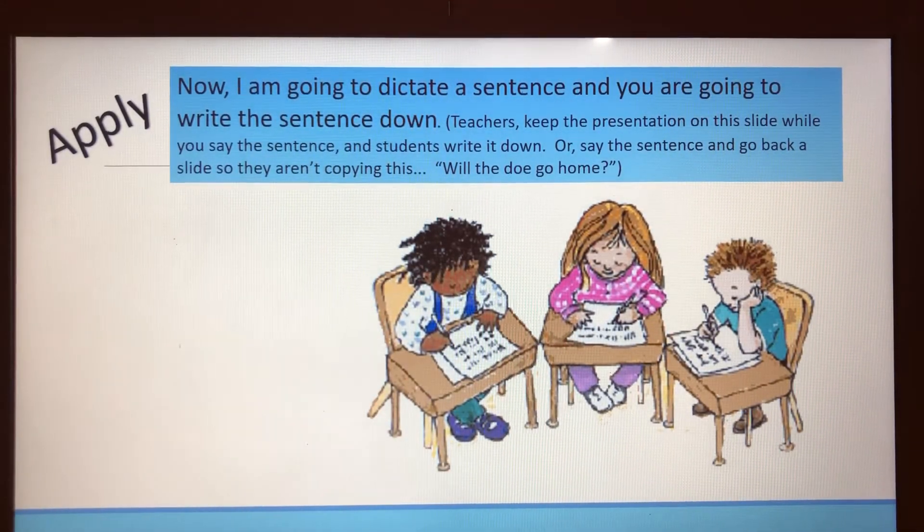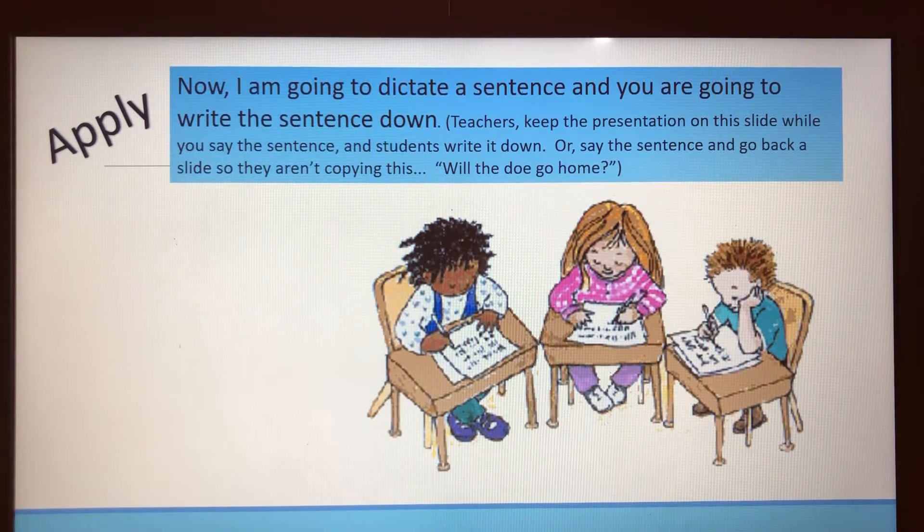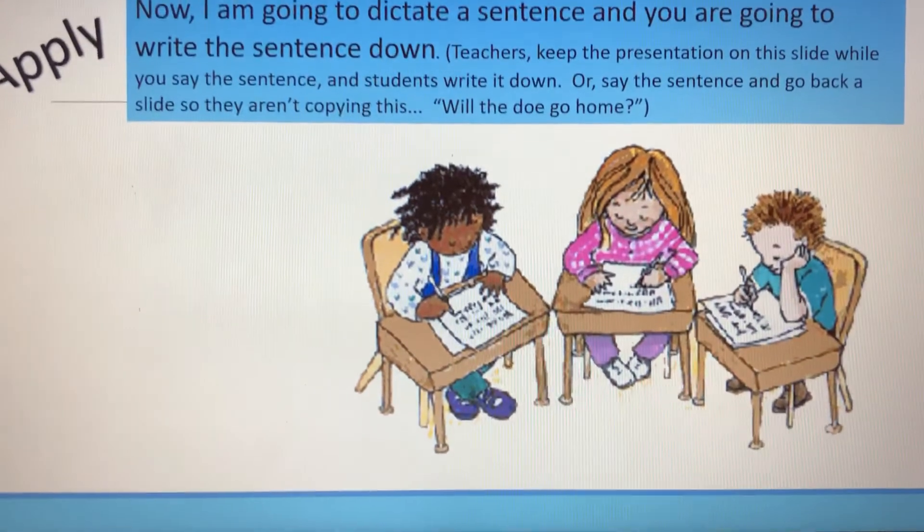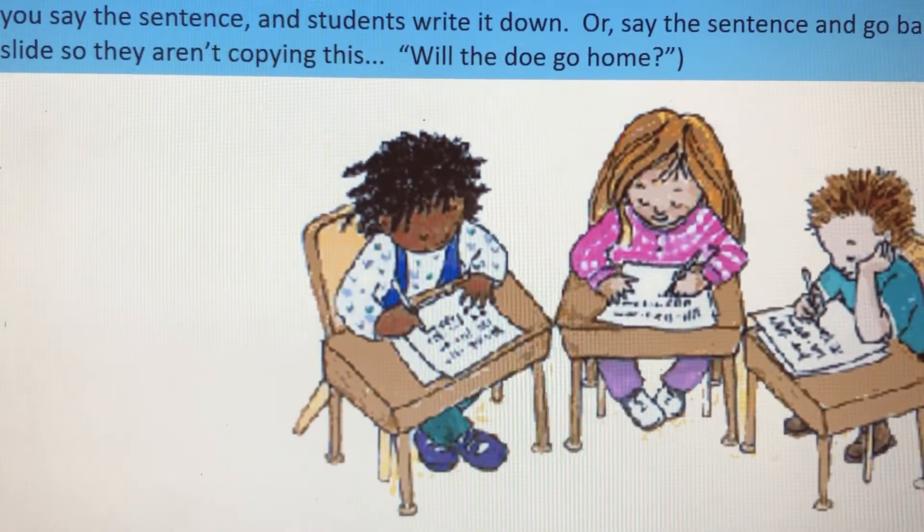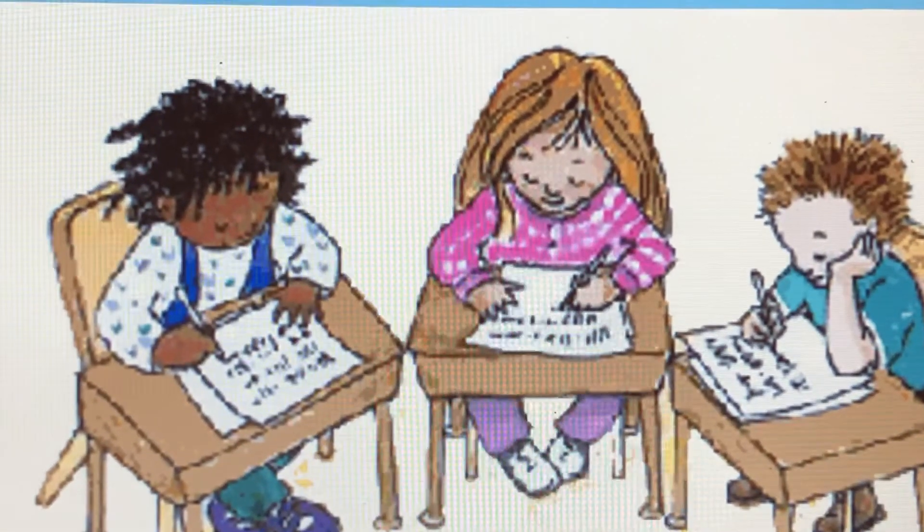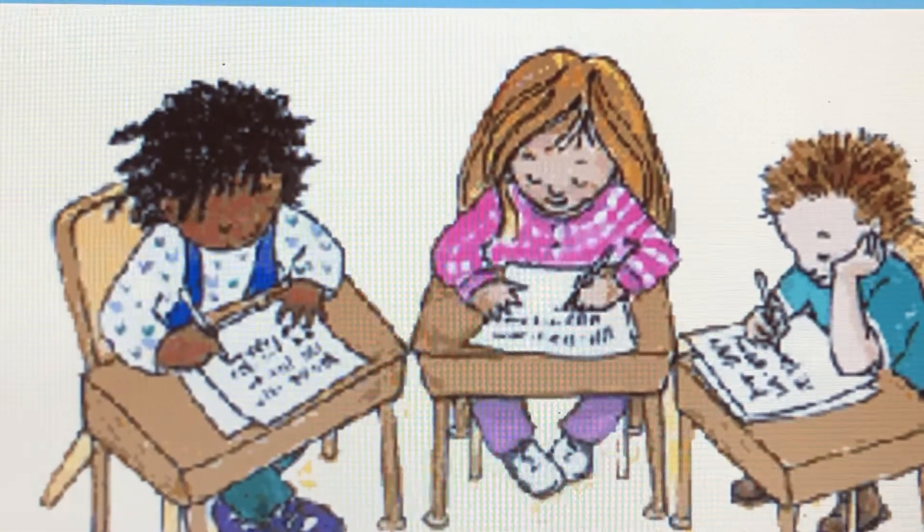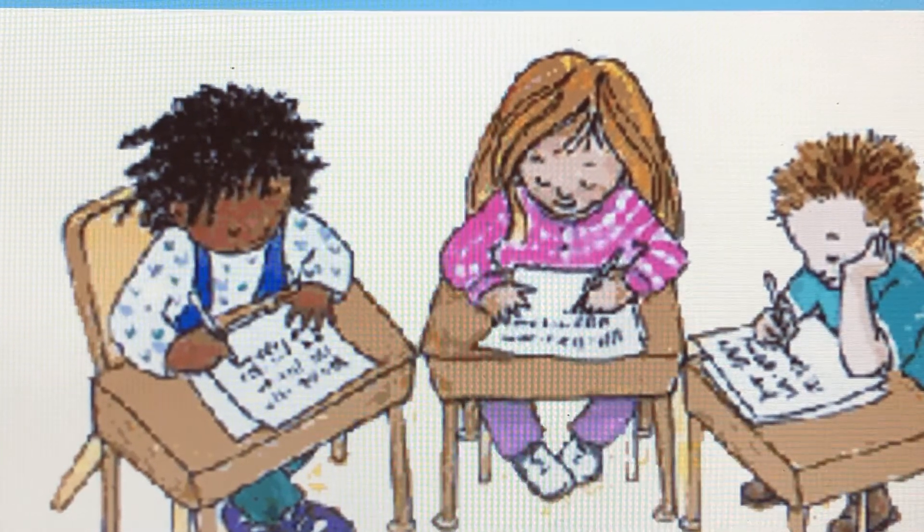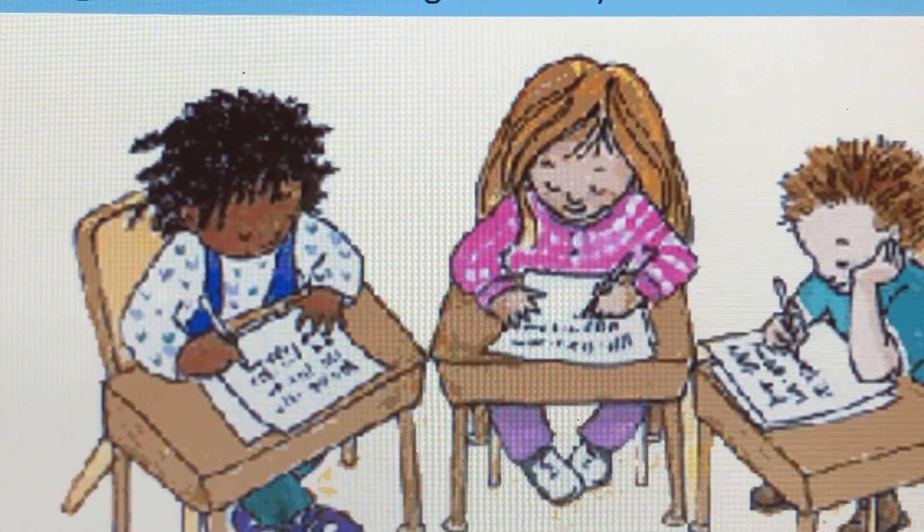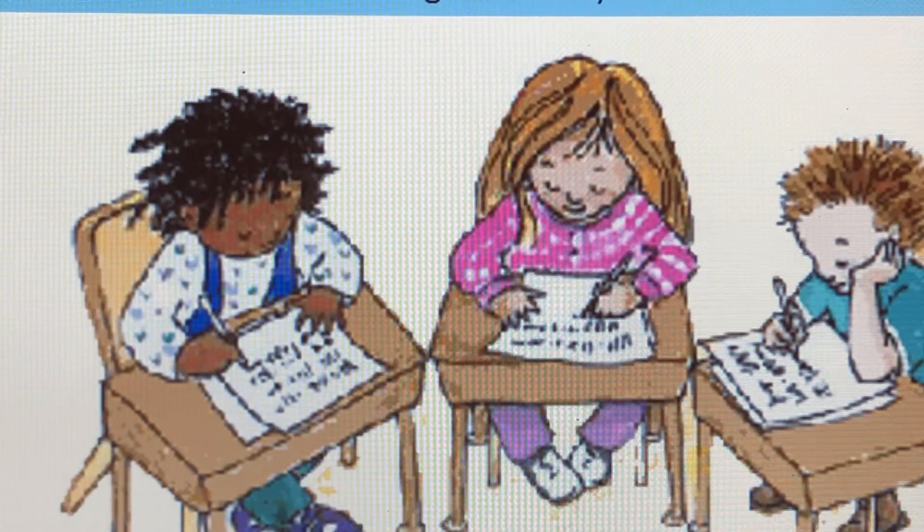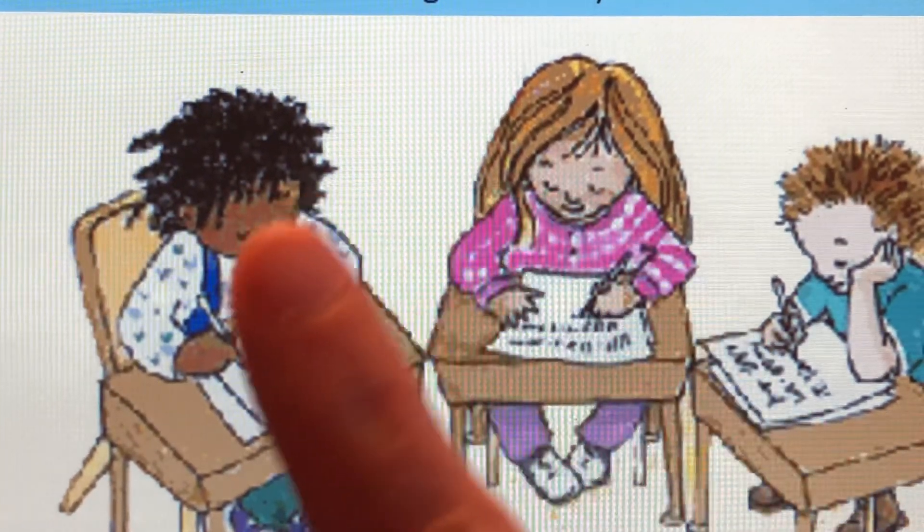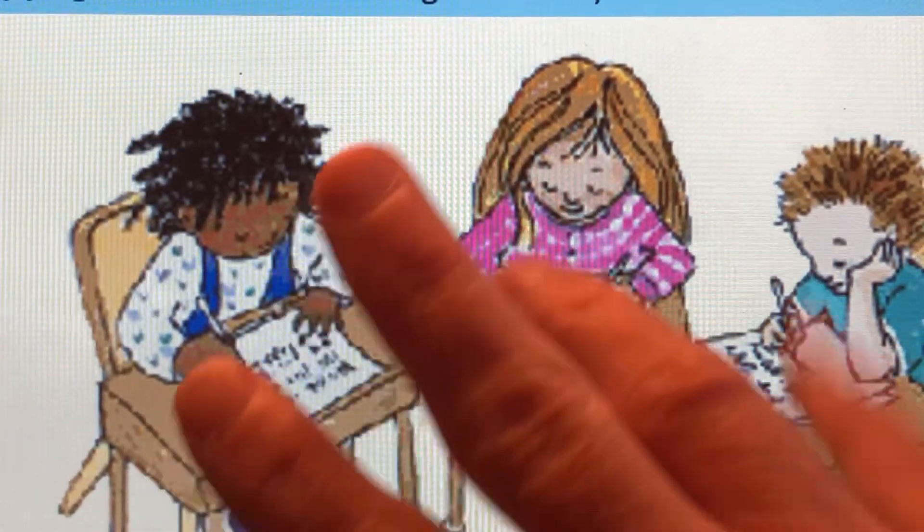Now I need you to get out your paper and pencil or whatever writing materials you have, and I am going to give you a sentence. And you are going to write it down and then check your work. So let's begin with our first sentence. Write the sentence: Will the doe go home? Let me read it again. Will the doe go home? And I am going to count the words in that sentence. Will the doe go home? That's five words.